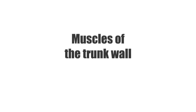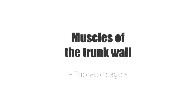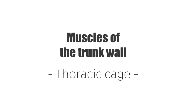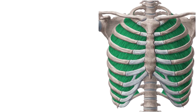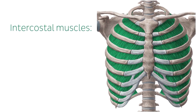Let's begin with the muscles of the thoracic cage. We'll start off by looking at the intercostal muscles. The intercostal muscles can be divided into the internal and external intercostal muscles. Together these muscles are a group of intrinsic muscles of the chest wall and they occupy the intercostal spaces.